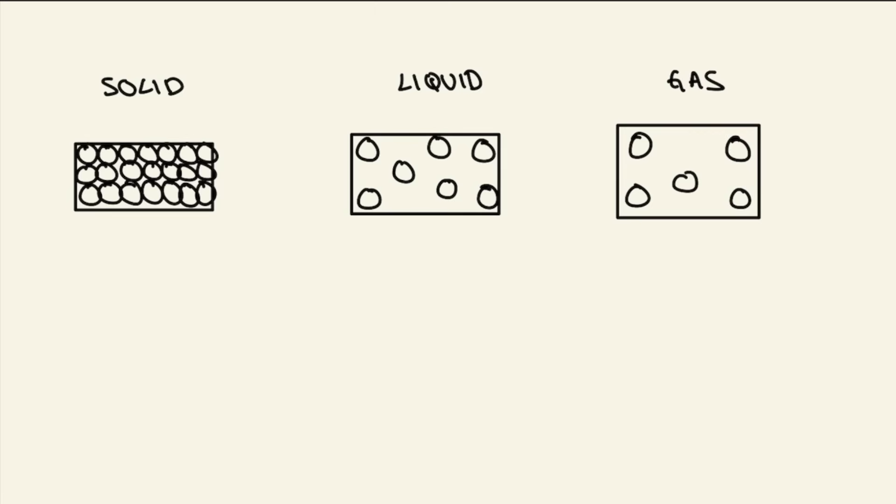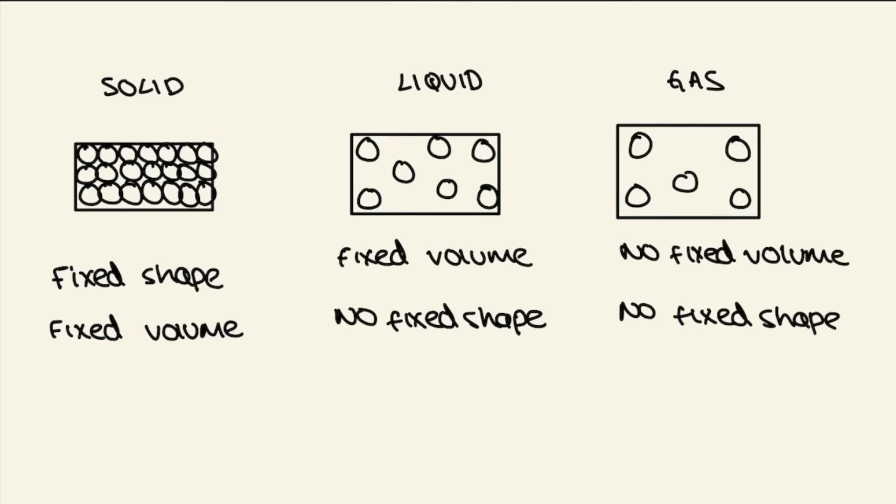We have three states of matter: solid, liquid, and gas. Solids have fixed shape and volume. Liquids have a fixed volume but no fixed shape, and gases have neither fixed volume nor shape.